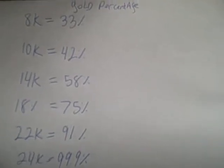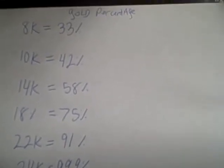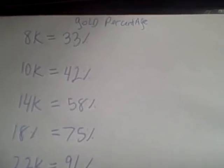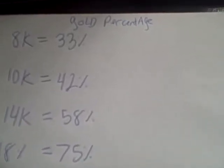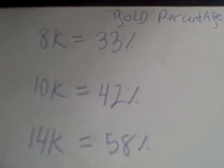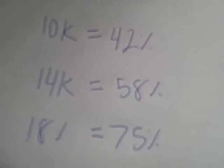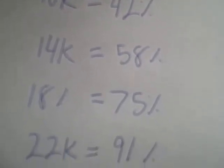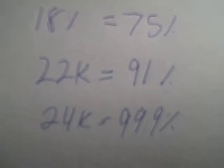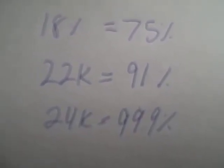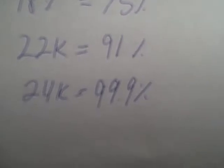Hey, welcome back. This is part two — the gold percentage values corresponding to their carat. These are the percentages: 8 carats is 33%, 10 carat is about 41 to 42%, 14 carat is 58%, 18 carat is 75%, and then 22 and 24. I want to remind people that...